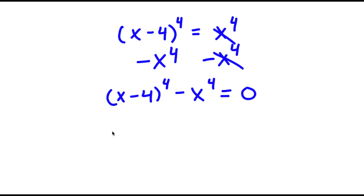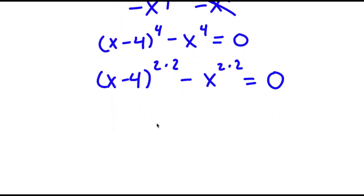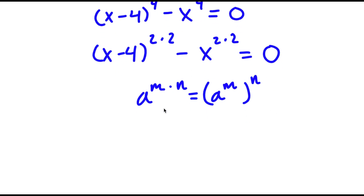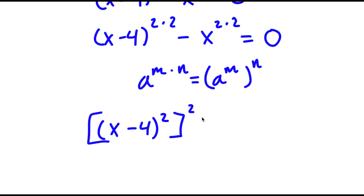Now I'm going to rewrite this as x minus 4 to the power of 2 times 2 minus x squared times 2 is equal to 0. If I have something in the form a to the power of m times n, this is equal to a to the power of m to the power of n. So x minus 4 to the power of 2 times 2 equals x minus 4 to the power of 2, to the power of 2, minus x to the power of 2 times 2, which is x squared to the power of 2.